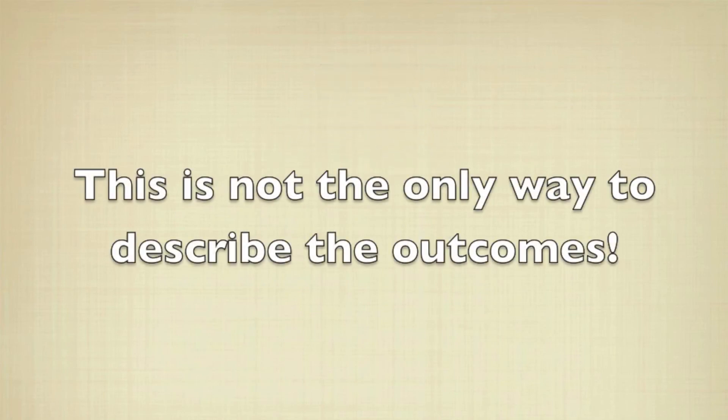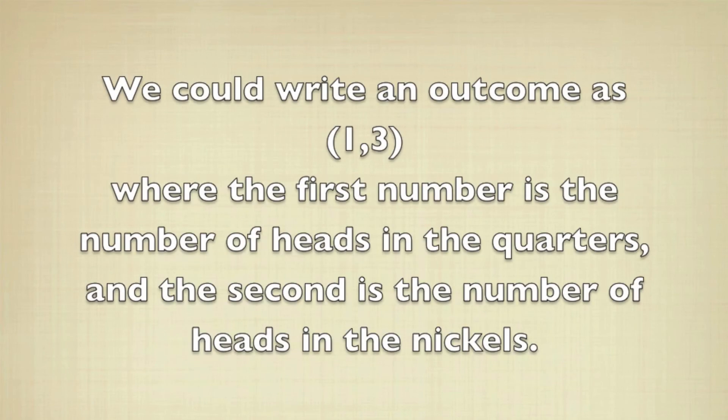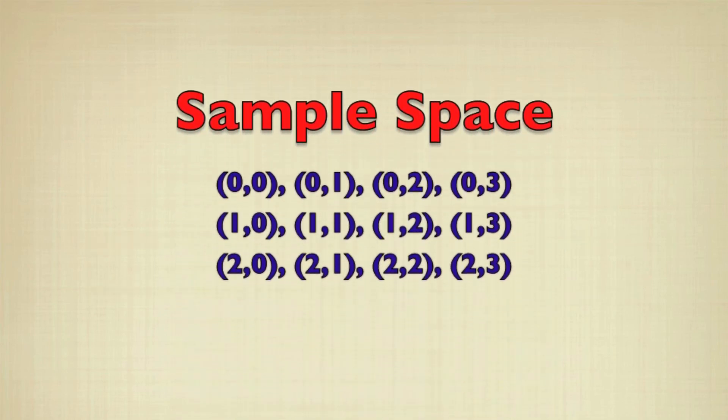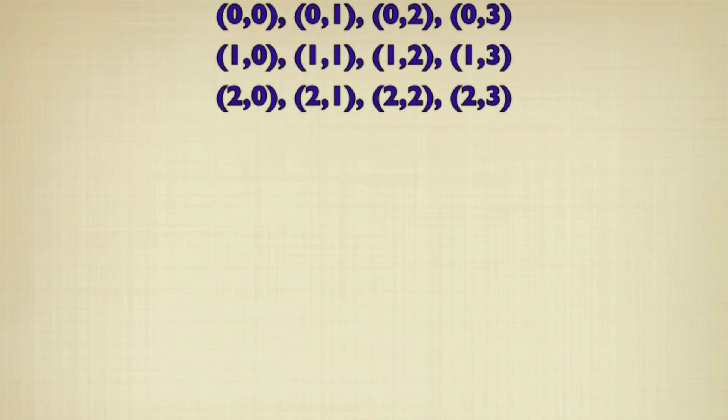This is not the only way you can write down the outcomes. We could actually write them down as a pair of numbers, where the first number is the number of heads in the quarters, and the second number is the number of heads in the nickels. In this case, the sample space will look somewhat different, but it's going to have the same number of elements, and each element will correspond to one of the elements we had written down before.